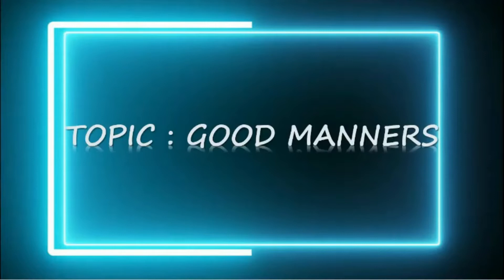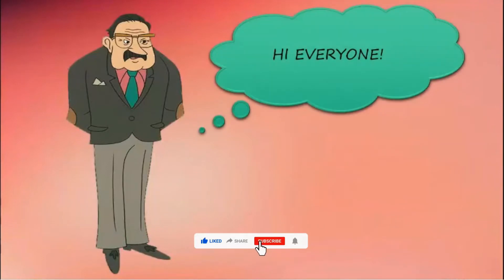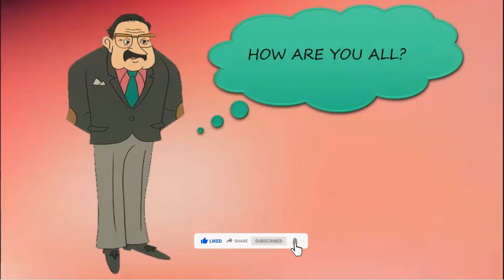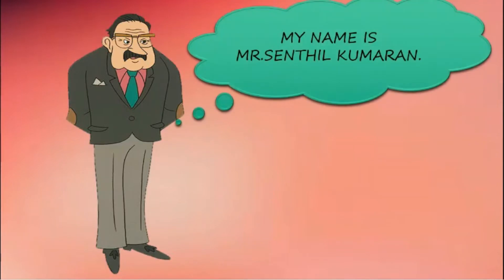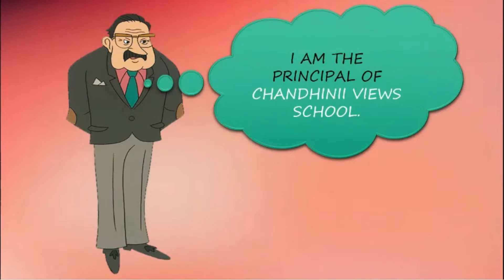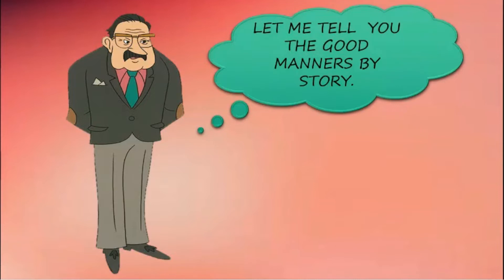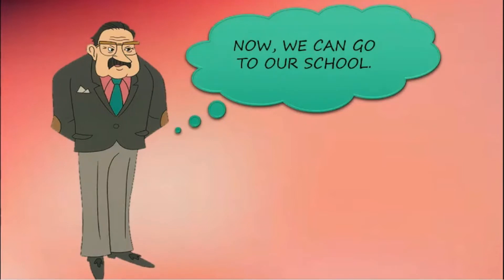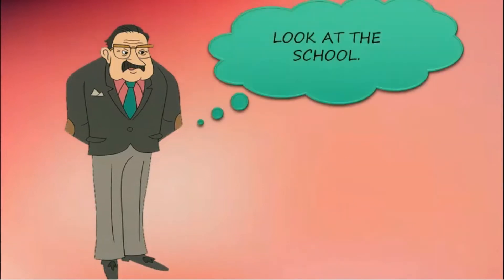With that we can begin our session. This is for Class 2 Object English, Lesson Number Four, topic: Good Manners. Hi everyone, hope you're all fine and in good health. My name is Mr. Sender Kumarin. I'm the principal of Chandini Views School. Today we are going to learn about good manners. Let me tell you about good manners through a story. Now we can go to our school — this is our school, Chandini Views. Look at the school.